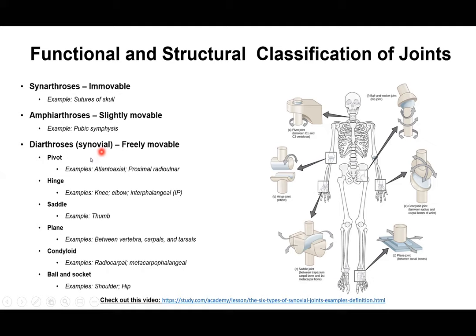The first subcategory of synovial joints is pivot joints, where one bone is fixed and the other rotates. An example is the atlantoaxial joint between C1 and C2 vertebrae, which allows us to shake our head no. Another example is the proximal radioulnar joint — when going from supination to pronation, the radius rotates over the stationary ulna.